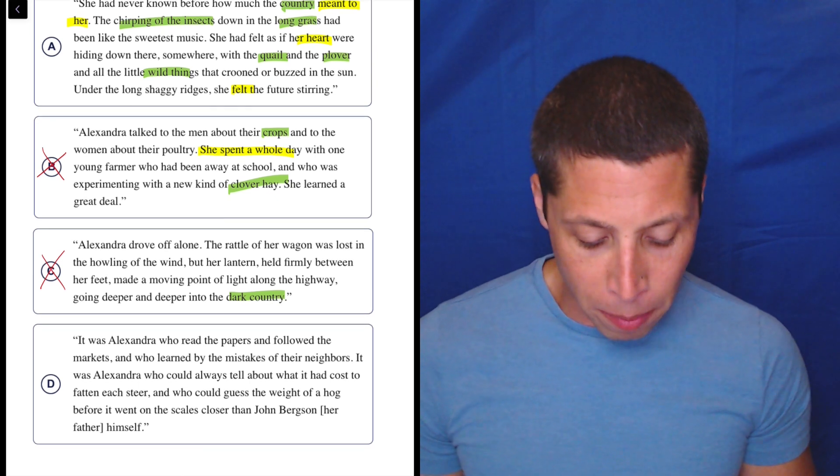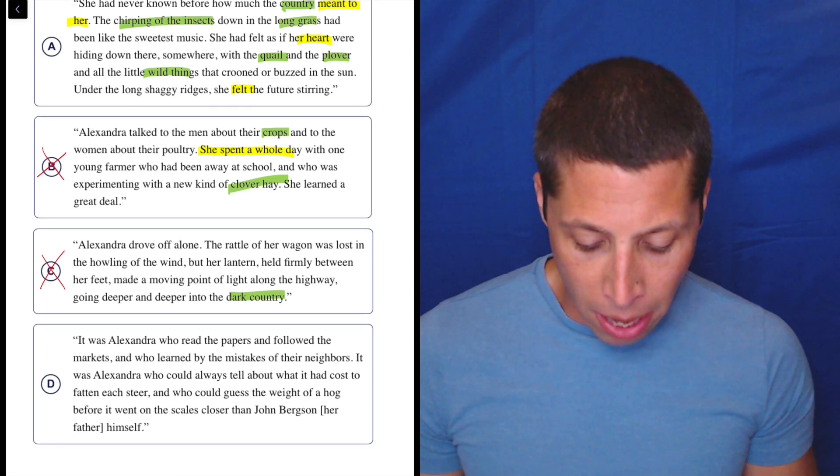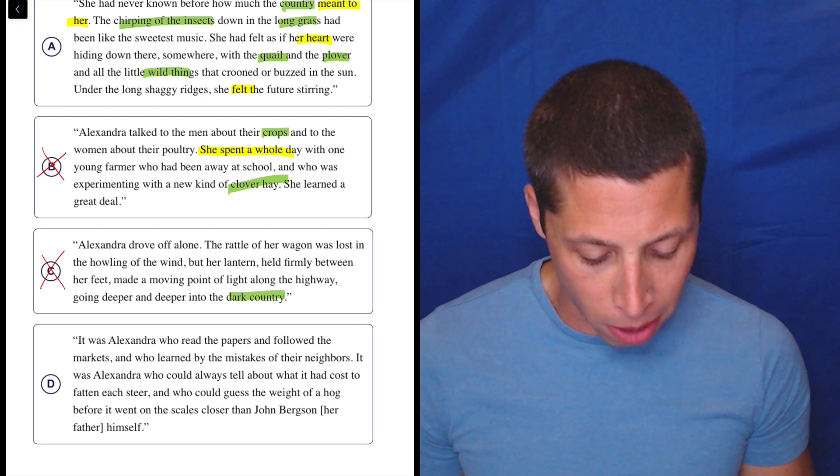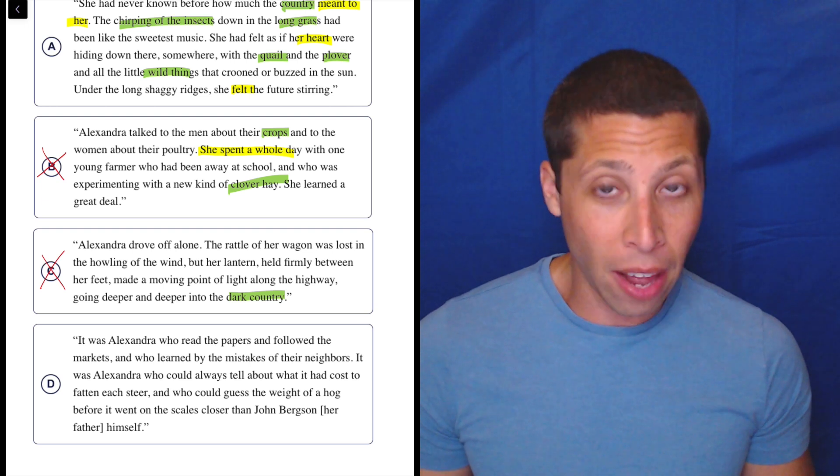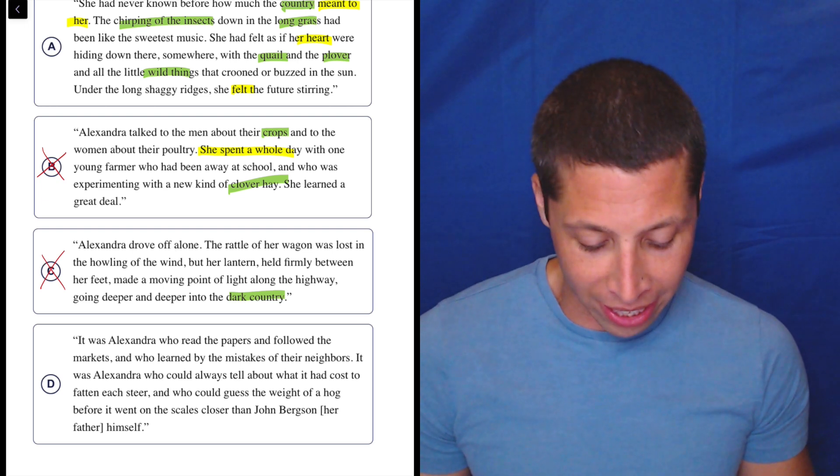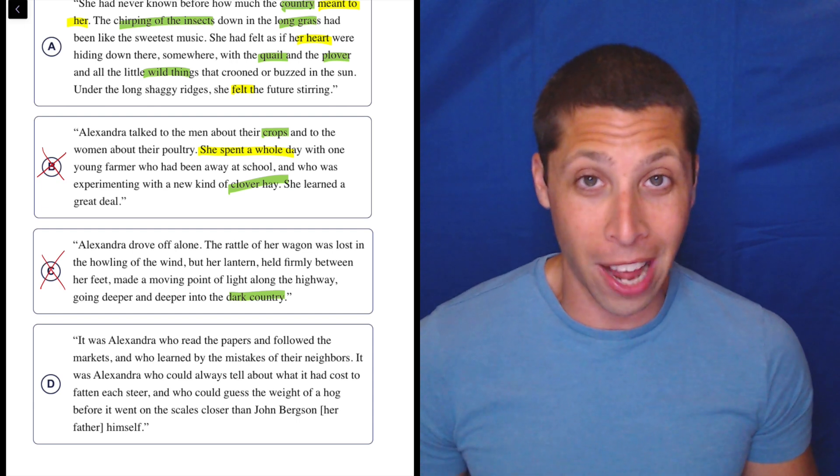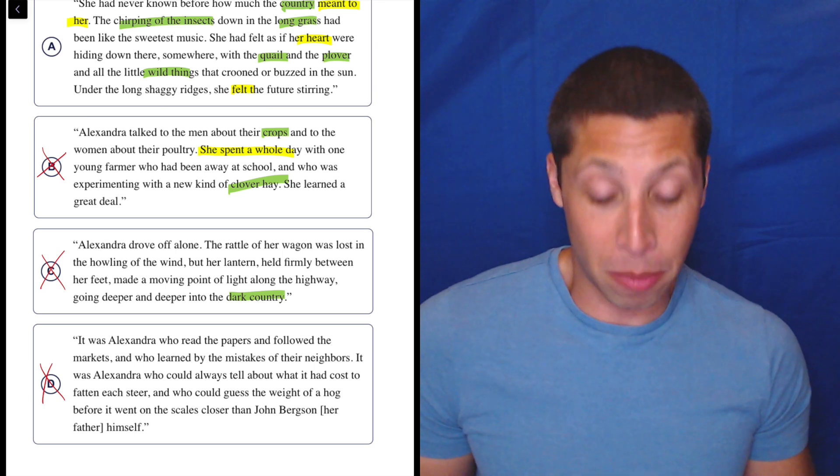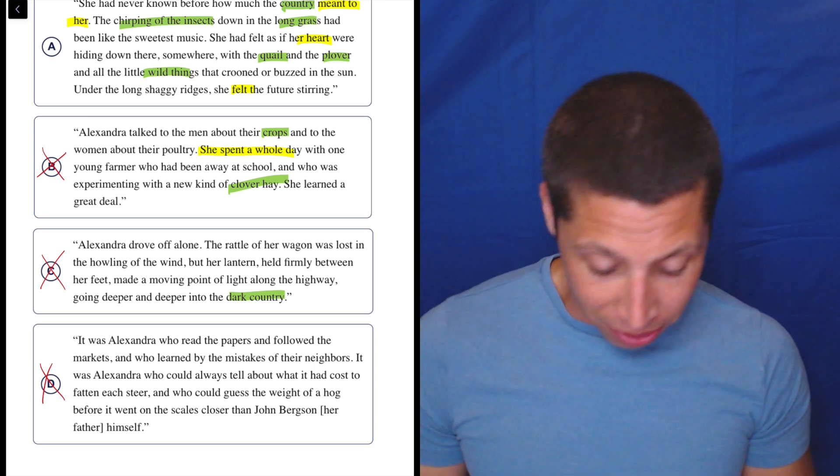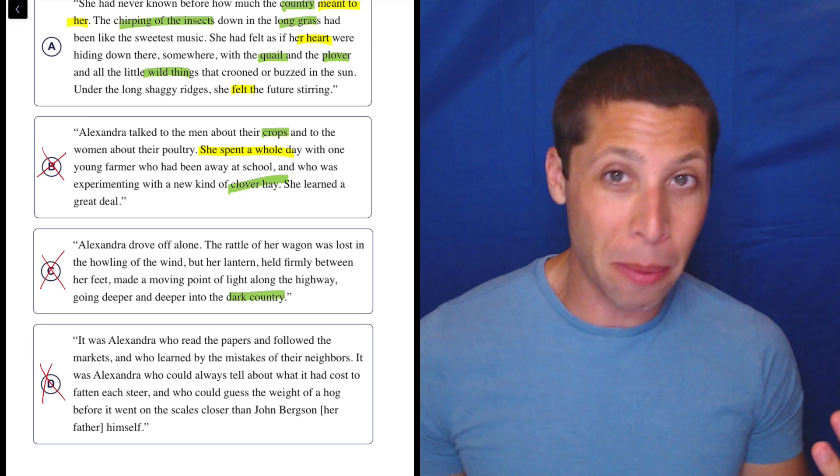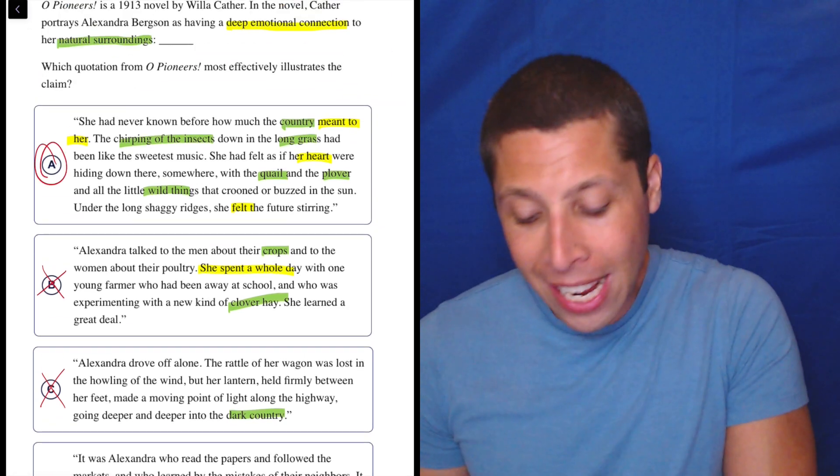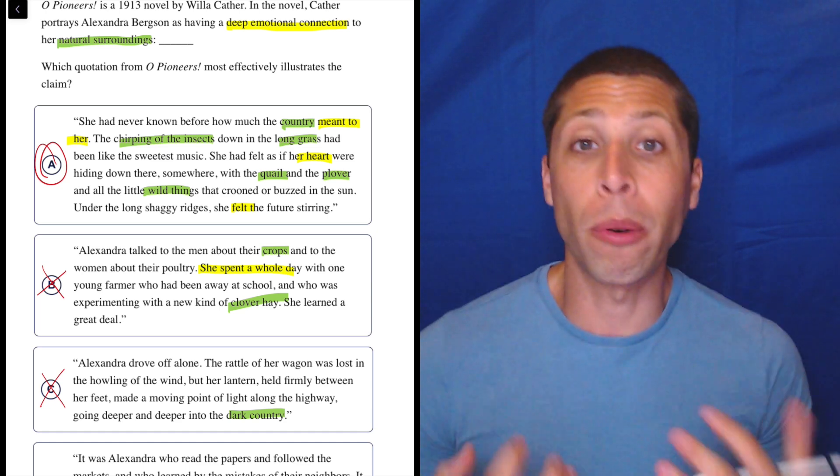D, it was Alexandra who read the papers and followed the markets and who learned by the mistakes of their neighbors. It was Alexandra who could always tell about what it had cost to fatten each steer and who could guess the weight of a hog before it went on the scales closer than John Bergson, her father himself. I got nothing here. Unless we stretch it to say the hogs and the steers are natural surroundings, but I don't know. That sounds like a farm. That doesn't sound like wildlife. Nothing speaks to me here. Maybe that she's really into reading the papers, that's a deep emotional connection? I don't think so. It just seems like she likes looking at numbers. It's definitely A. I knew it from the start. You need to know it too.